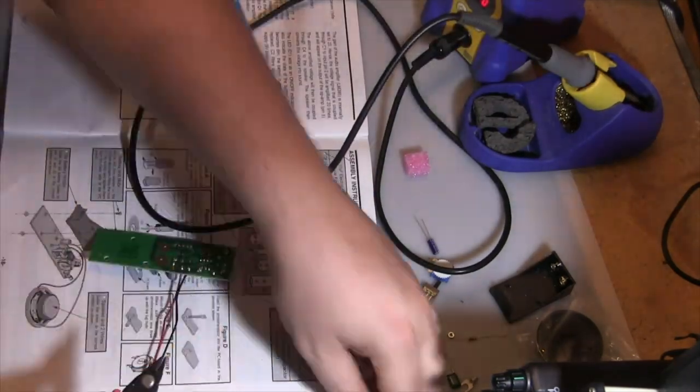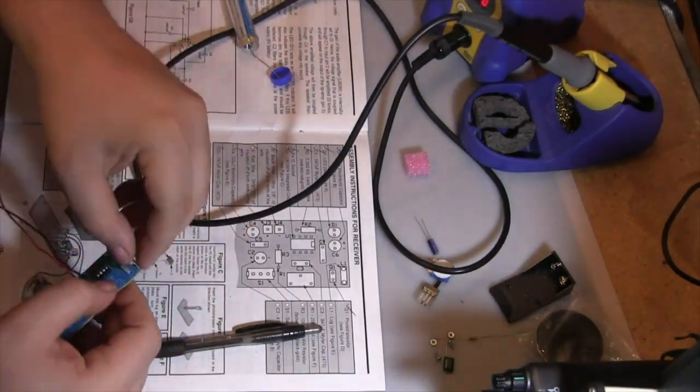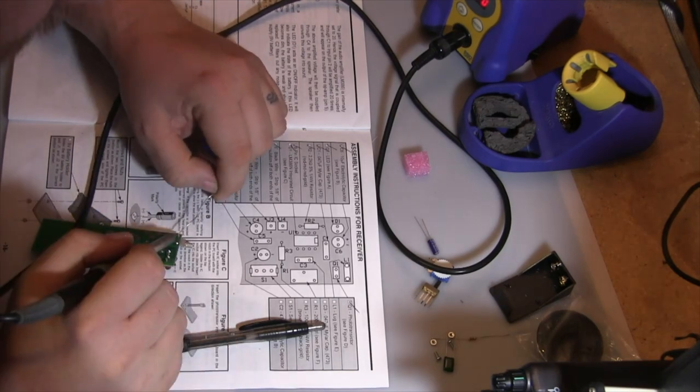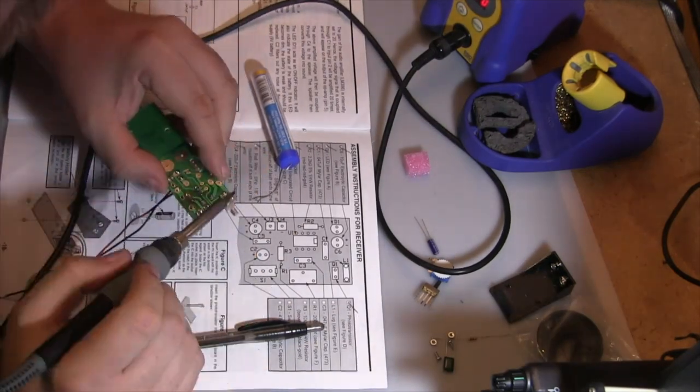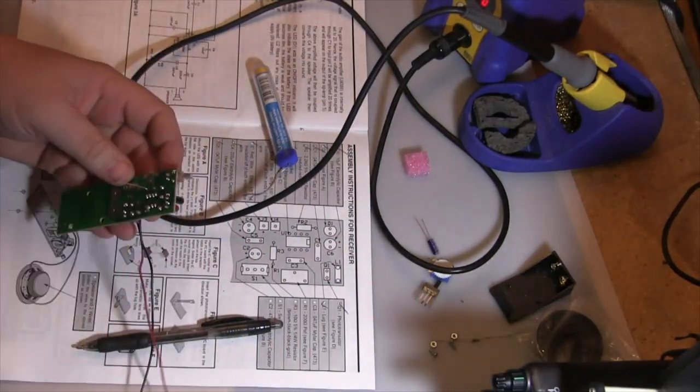So the photo transistor has to be installed in a certain way for it to work correctly. There's a little dimple on one side that has to be facing toward the fiber optic cable.